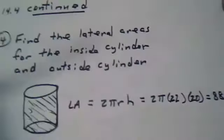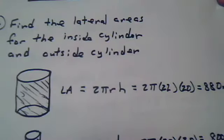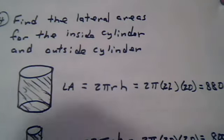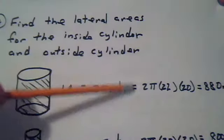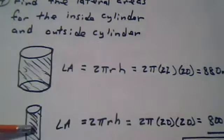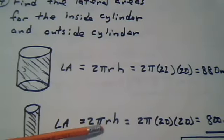Now let's find the lateral areas of the two cylinders. Find the lateral areas for the inside cylinder and for the outside cylinder. Notice this is lateral area, so it's this formula. This is lateral area for the cylinder. These are cylinders. So that would be the formula.